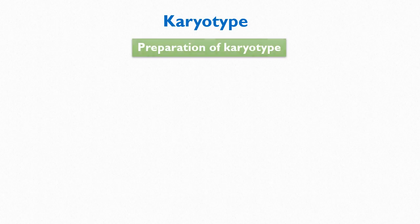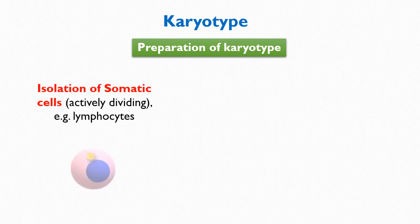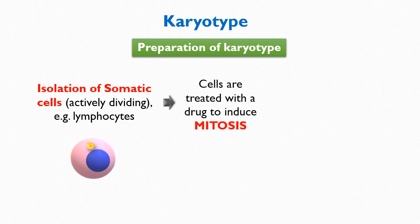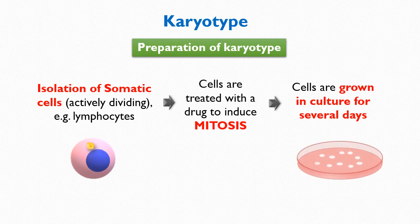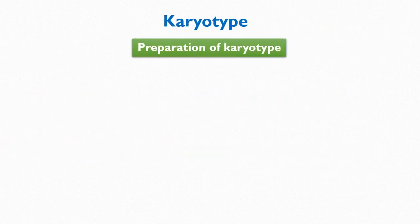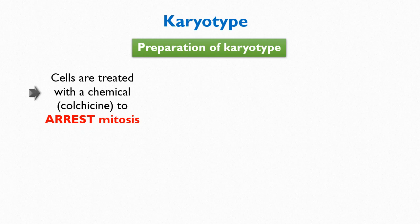Let's understand how karyotype is prepared. Karyotypes are prepared from actively dividing cells. First, the somatic cells are isolated from an individual. The most commonly used somatic cells for the preparation of karyotype are lymphocytes, a type of white blood cell. These cells are then treated with a drug to stimulate mitosis and grown in culture for several days. Since chromosomes are in their most condensed form at metaphase, these cells are then treated with another chemical to arrest mitosis at metaphase, making the cell unable to enter anaphase. One example of such a chemical is colchicine, also referred to as chasine.